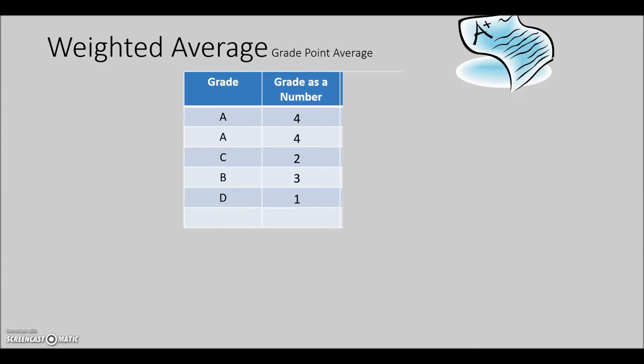We'll want to add up all the values of the grades. If we add up those, four, four, two, three, and one, gives us a total of fourteen. Divide by the number of classes taken, there's five classes. So, fourteen divided by five gives us an unweighted GPA of 2.8.